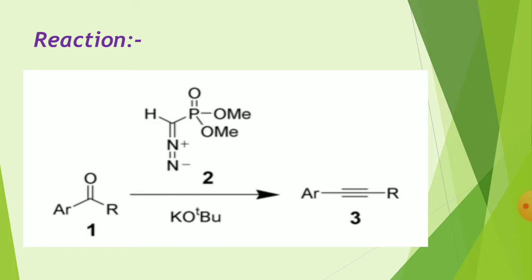In homologation, the starting material has the aromatic carbon and the ketone carbon — that makes two carbons. In the product, the aromatic carbon is connected via a triple bond with one additional carbon on each side, making a total of three carbons, confirming one carbon addition.